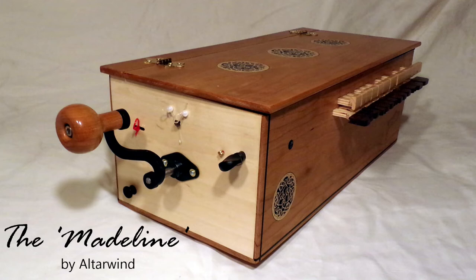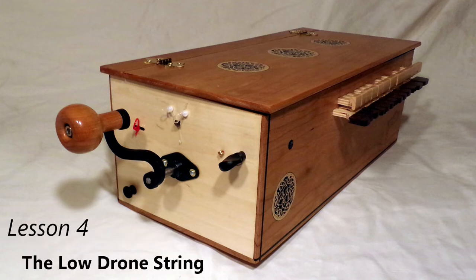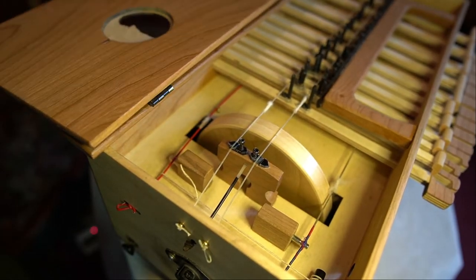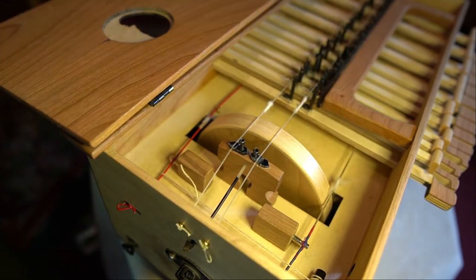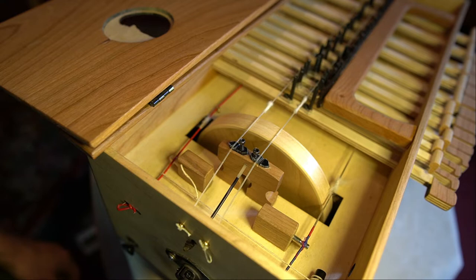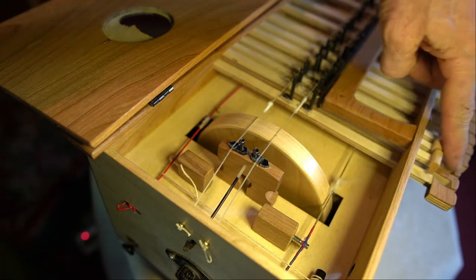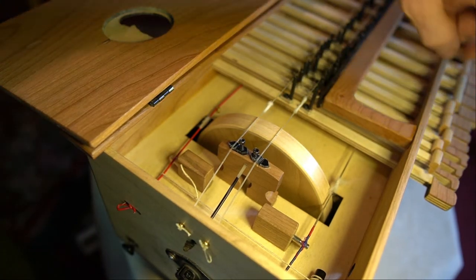Welcome. In this video, we're going to talk about the low drone string on our Madeline hurdy-gurdy. Inside the instrument, we're going to open the lid so we can see what's going on in there. It's the silver string as we hold the instrument. It's closest to our lap or closest to the low hanging buttons off the side.